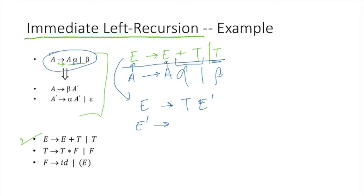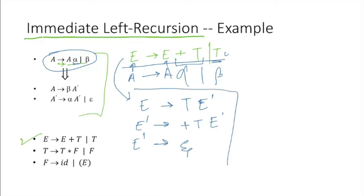So we can rewrite this as: E to T E dash, where E dash is the new non-terminal, and E dash to plus T E dash. We also add E dash to epsilon. This gives us no left recursion for this production rule.